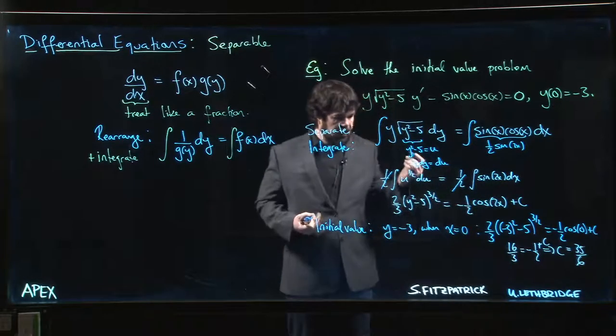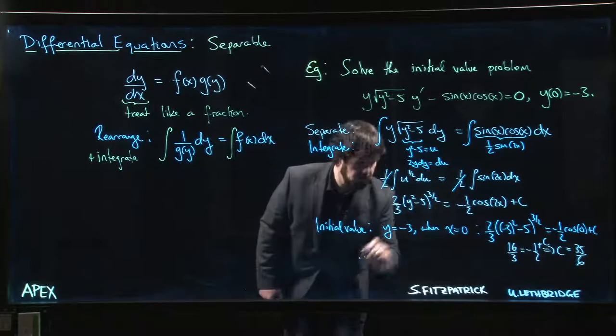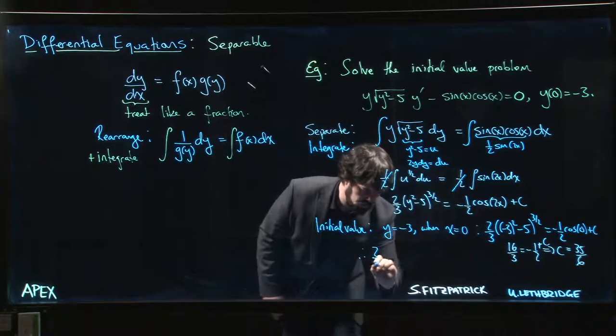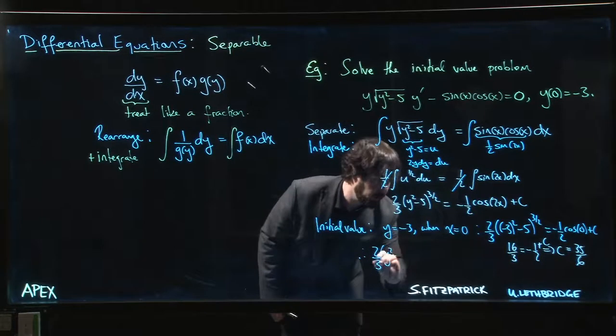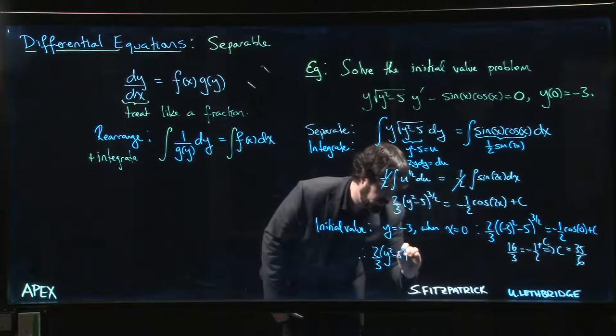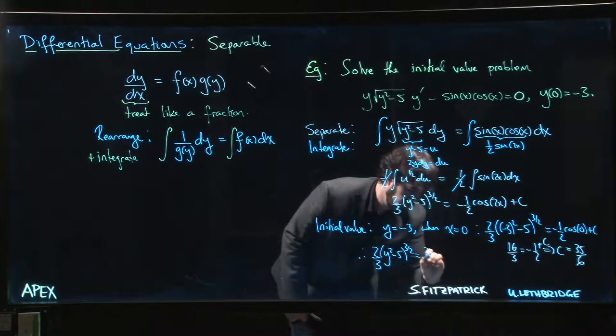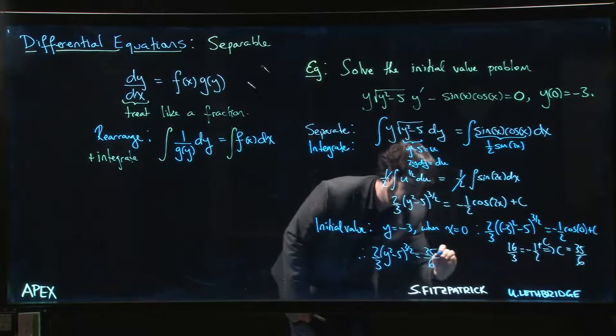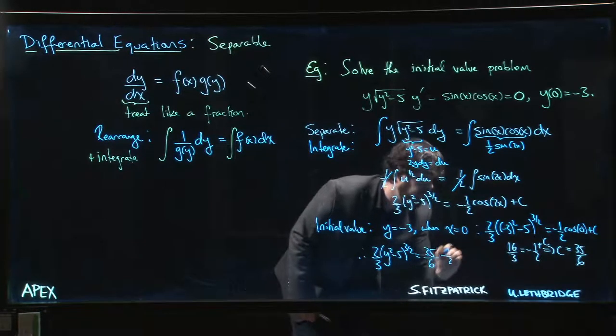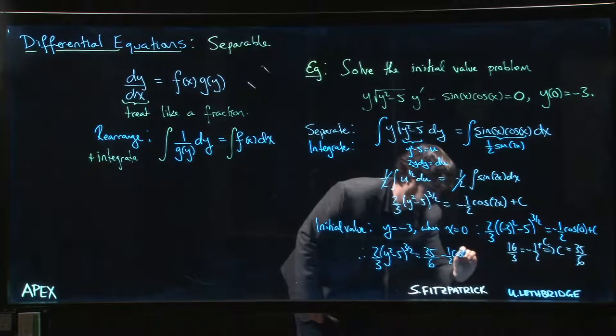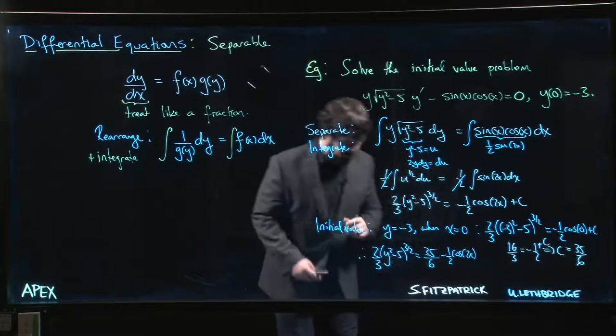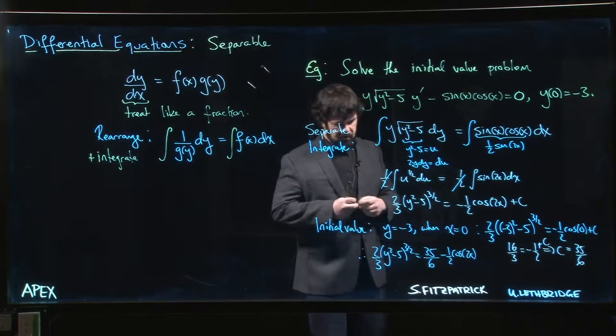And that gives us our final answer: two thirds y squared minus five to the three over two is equal to thirty five over six minus one half cos 2x.